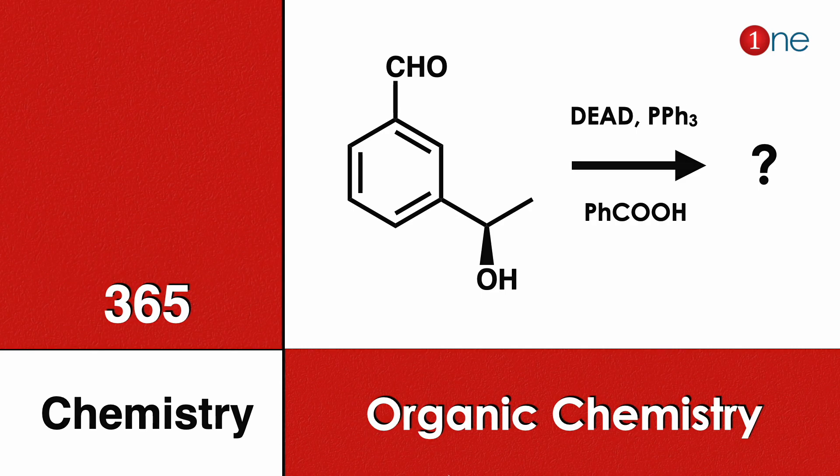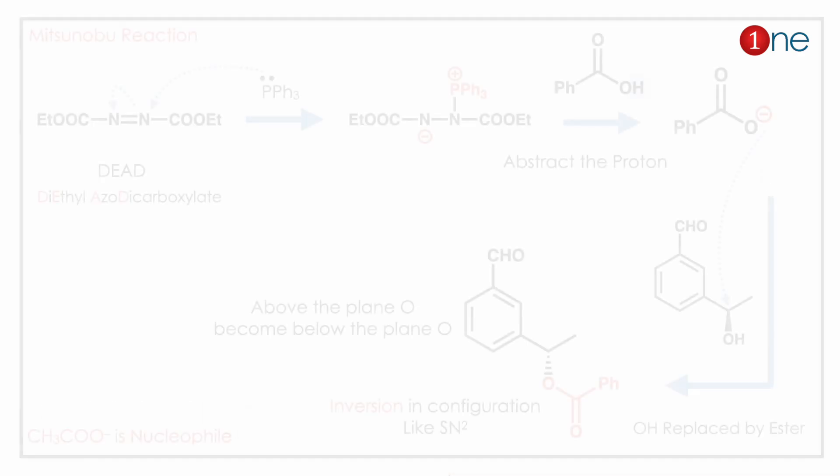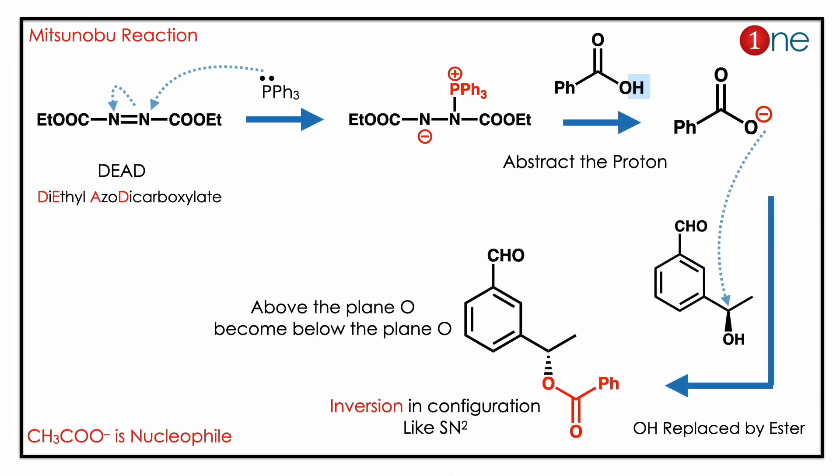The answer lies in the very important Mitsunobu reaction. In the first step of the reaction, phosphine attacks. You also have a stabilized anion which is a nucleophile that abstracts the proton, generating another nucleophile — the benzoate nucleophile — which is unusual in any reaction. The benzoate nucleophile then attacks the carbon.